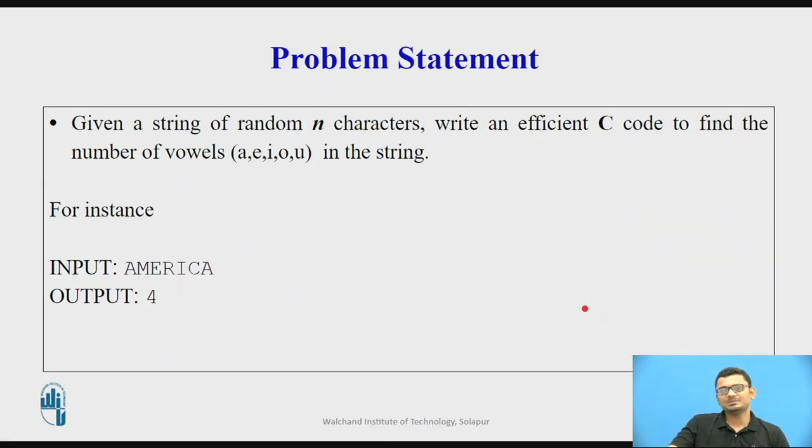The problem statement that we will be discussing today is: given a string of random n characters in English language, write an efficient C code to find the number of vowels in the string. In English alphabets we know that the characters A, E, I, O, U are known as vowels and the remaining 21 alphabets are known as consonants.